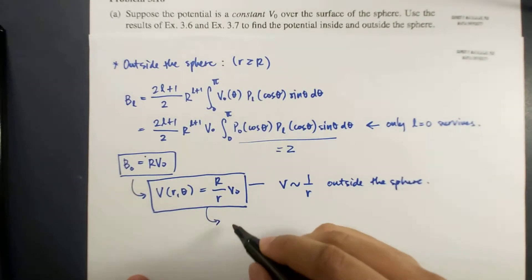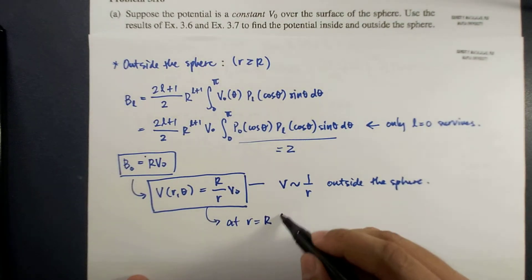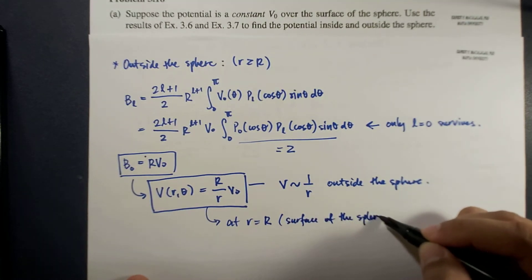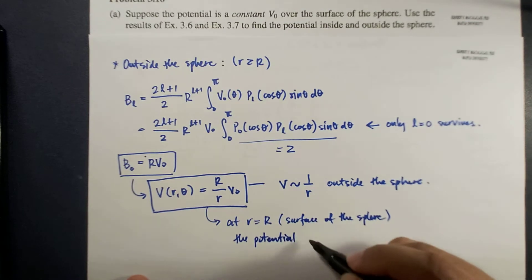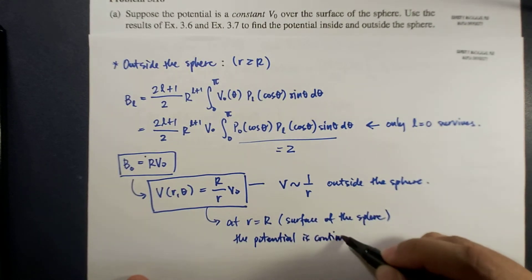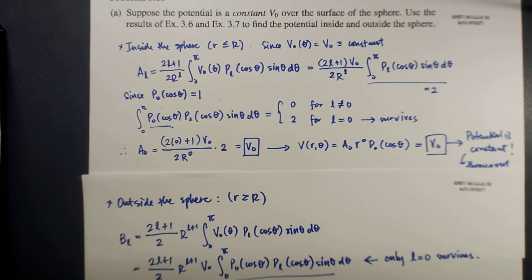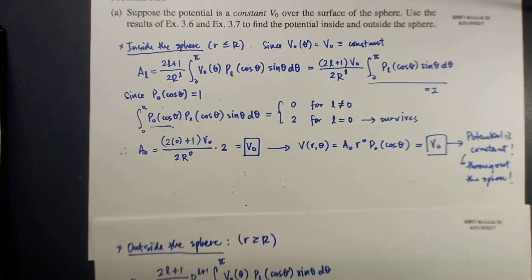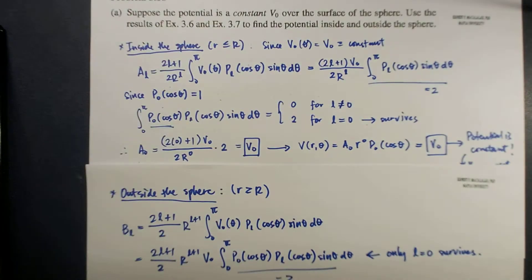This also shows that at r equal to R — that is, at the surface of the sphere — the potential is continuous. It means the value at r = R is the same whether we use the solution for inside or outside the sphere.